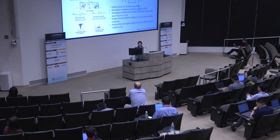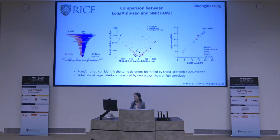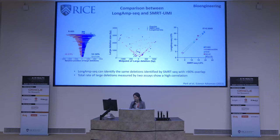We analyzed the same gene-edited samples by both SMRT-seq and LONG-MUSIC and showed overlapping small indel profiles. For large deletions, the same sample analyzed by both methods identified the same deletion patterns with over 90% overlap, and the total rate of large deletions measured by both assays shows high correlation.